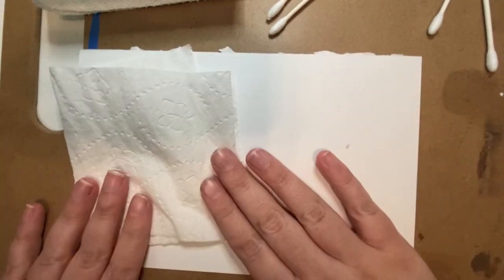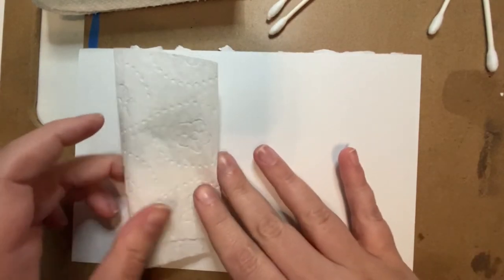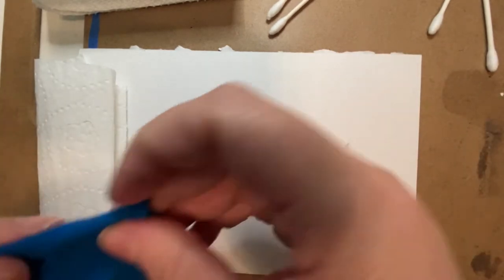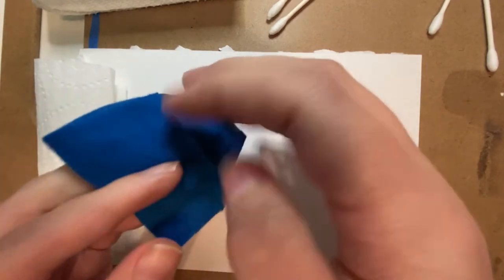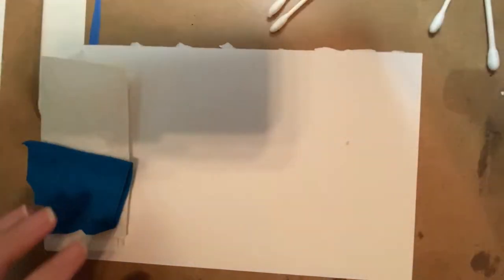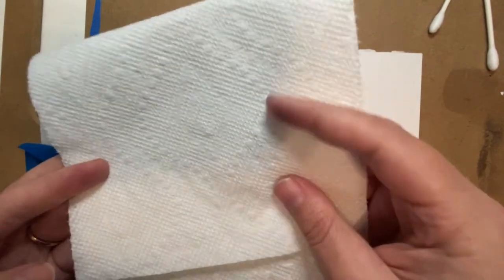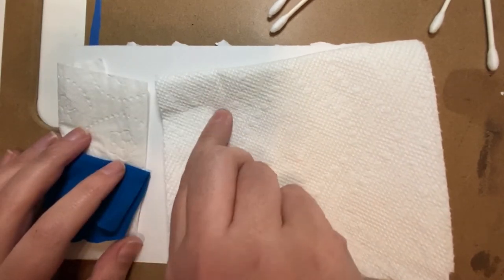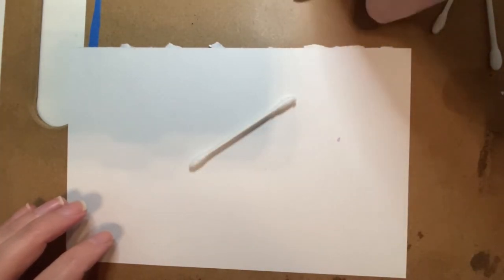So today I have a few different things to blend with. I have good old fashioned toilet paper. Hopefully you guys have some of that right now. Sorry if you don't. I have an old t-shirt that I've cut pieces of. This is like a polyester cotton blend. Cotton tends to work a little bit better but I used all of my cotton t-shirts to make face masks so I don't actually have those. So I have some paper towel and the difference between the paper towel and the tissue paper is texture and thickness. So this will give you a softer blend and this will be a little bit rougher. And then I also have q-tips. I'm going to show you a few different ways of using q-tips.